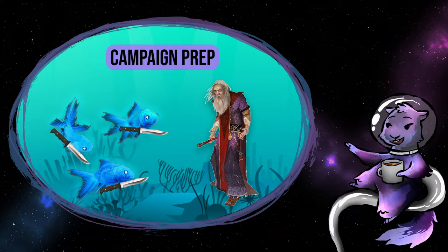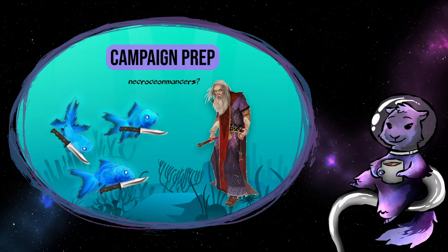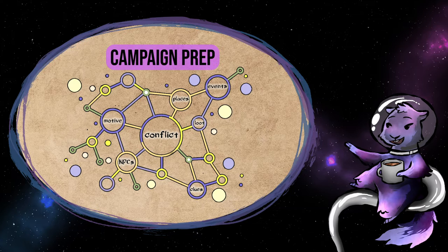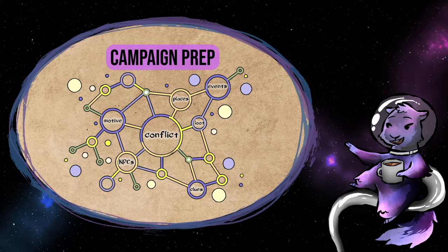Worldbuilding is often a component of this. Oceanic necromancers gotta live somewhere. But here it's done in service of creating the scaffolding for your campaign. What are the motives of the villains? What's their nefarious plan? How can the party uncover it? This is where you form and flesh out your campaign concept itself.